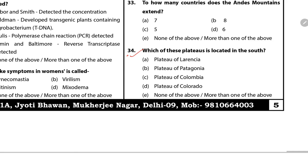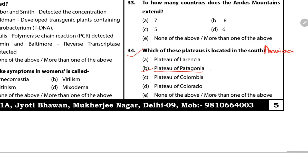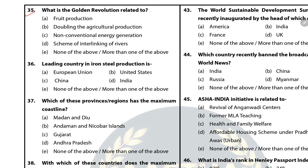Question 34: Which of the following plateaus is located in South America? The answer is B — Plateau of Patagonia, located in Argentina. Question 35: What is golden revolution related to? The answer is A — Fruit production.